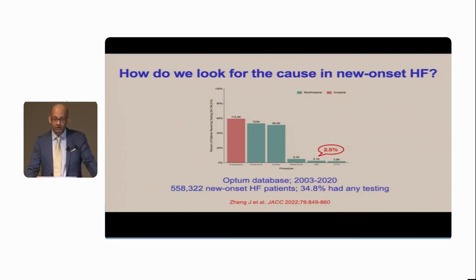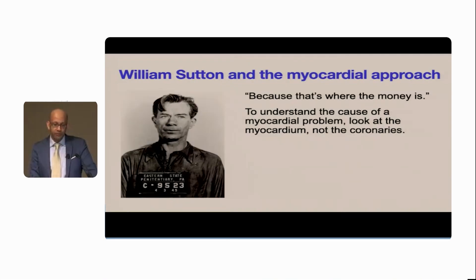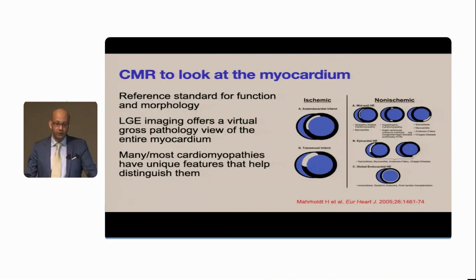The most common testing was invasive coronary angiogram, followed by stress ECG, nuclear imaging, and stress echocardiogram. MRI was done in only 2.5% of these patients, and CTA was done in less than 2%. CMR to look at the myocardium is the reference standard for function and morphology.